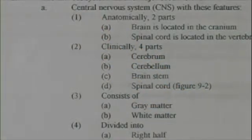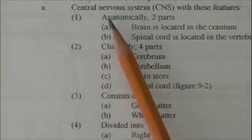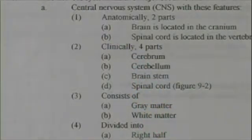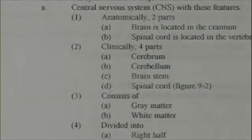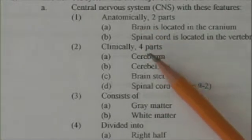This is a very elementary introduction. You may know this already, but it doesn't hurt to go over some of this. The nervous system has two major subdivisions, from an anatomical point of view: the central nervous system and the peripheral nervous system. The central nervous system anatomically is divided into two parts: the brain and the spinal cord.